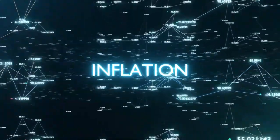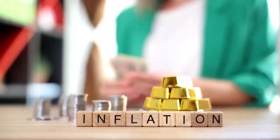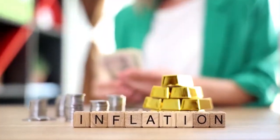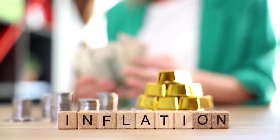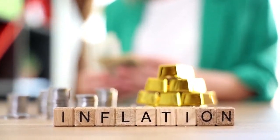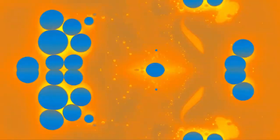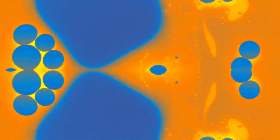At times, quantum fluctuations akin to those shaping the universe's structure cause certain areas where inflation ceases, resulting in a hot Big Bang. However, these regions are far fewer compared to those where inflation persists indefinitely. Notably, no two separate regions with Big Bangs will ever overlap because the expanding universe drives them apart.